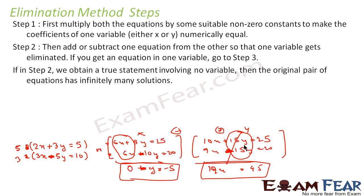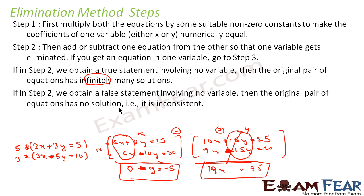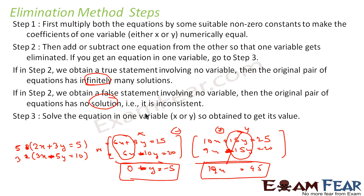Now, in the resulting statement: if you get a true statement, that means the system has infinite solutions. If you get a false statement, there is no solution. And if you get a specific value of x or y, that means there is a unique finite solution. For example, here we got y equals 5, and in the other case x equals 45 over 9 — both are finite solutions.